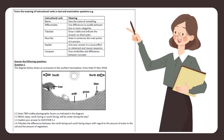Know the meaning of instructional verbs in test and examination questions. Name — give the name of something. Differentiate — use differences to qualify between two or more categories. Tabulate — draw a table and indicate answers as direct pairs. Describe — state in sentences the main points of a process. Explain — give your answer in a cause-effect or statement-and-reason sequence. Compare — give similarities and differences between concepts.